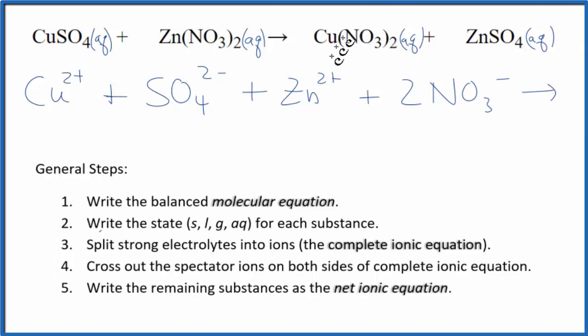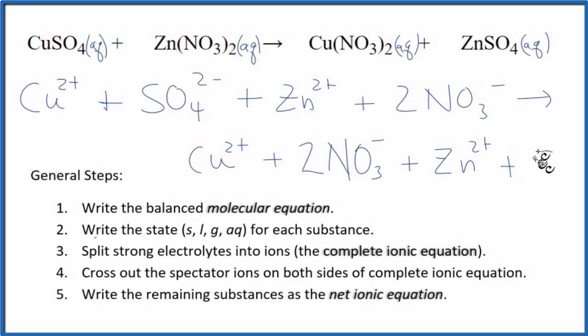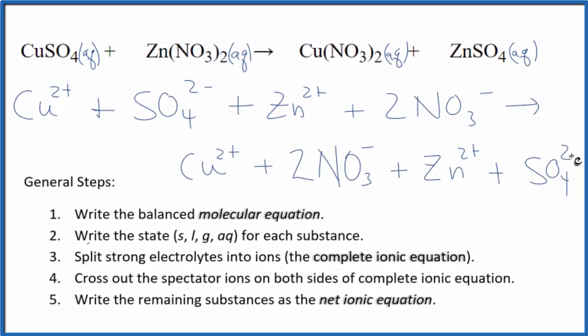Then in the products, Cu2+, plus the 2 nitrates, plus the Zn2+, plus we have that sulfate, SO4 2-. So these are all the ions.